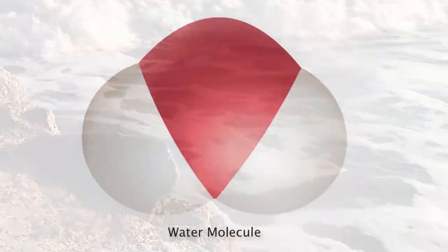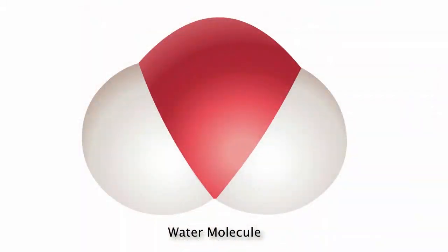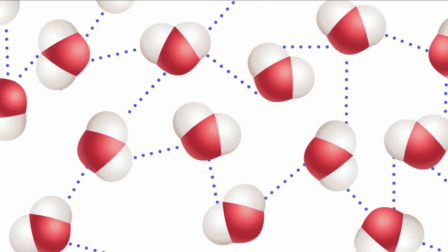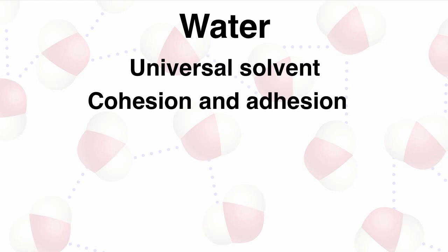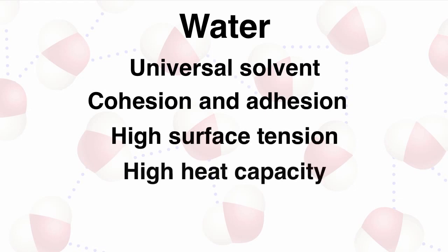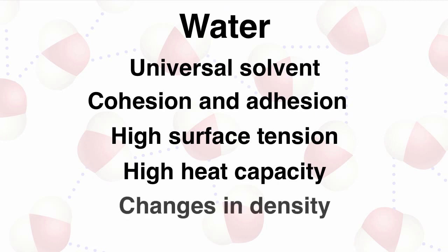The structure of a water molecule, and the fact that it is capable of forming hydrogen bonds with multiple other water molecules simultaneously, provides water molecules with some very unique characteristics. These include the ability to act as a universal solvent, the properties of cohesion and adhesion, a high surface tension, a high heat capacity, and changes in density based on temperature. Let's take a look at each of these in turn.